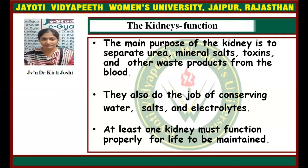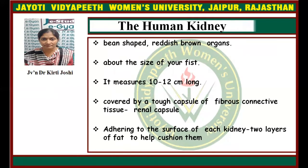At least one kidney must function properly for life to be maintained. A kidney is a bean-shaped, reddish-brown organ about the size of our fist, measuring about 10 to 12 cm long, covered by a tough capsule of fibrous connective tissue called the renal capsule, adhering to the surface of each kidney are two layers of fat to help cushion them.